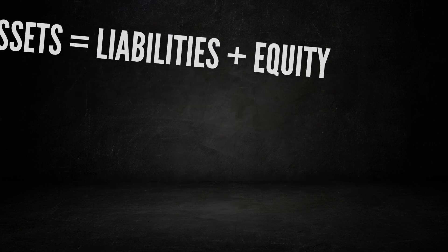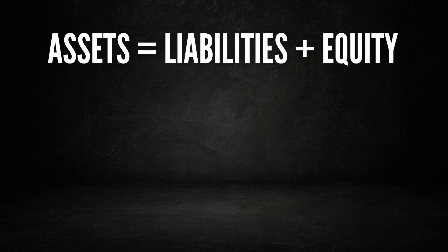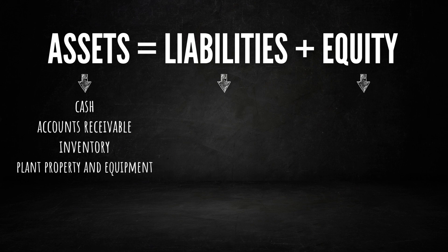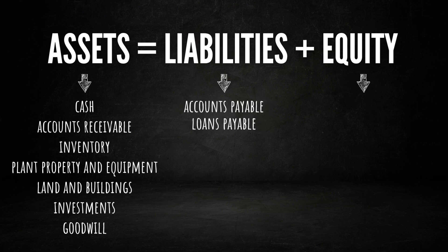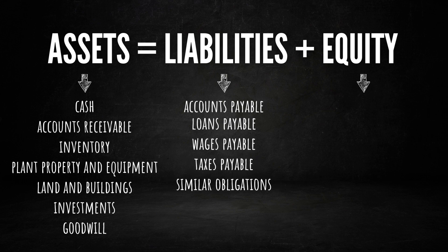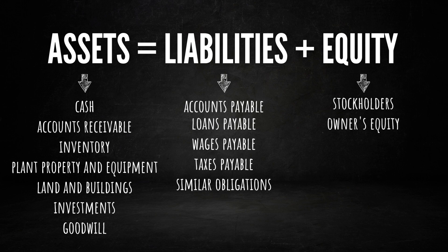Now, let's delve into the composition of assets, liabilities, and equity. Assets encompass a wide range of items, including cash, accounts receivable, inventory, plant property and equipment, land and buildings, investments, and even goodwill. On the other hand, liabilities consist of accounts payable, loans payable, wages payable, taxes payable, and other similar obligations. Equity primarily takes the form of stockholders' or owners' equity, along with retained earnings.